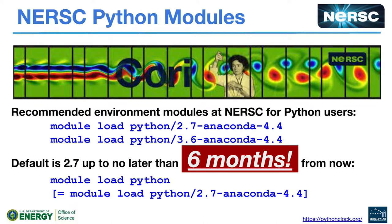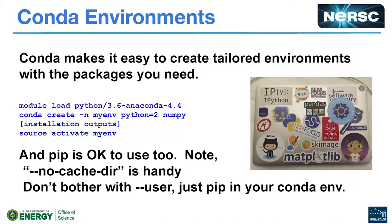Conda environments — pretty much everyone knows how to do them. 'conda create -n' with Python equals whatever is important because it might pick a version for you, and you want to make sure it's the Python you want, probably Python 3. Then you activate the environment and install whatever you want. You can use pip.